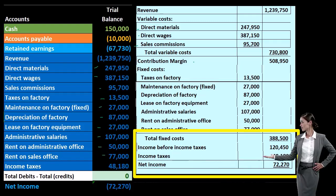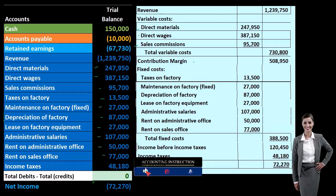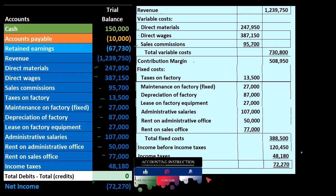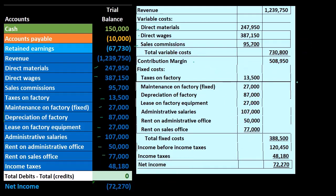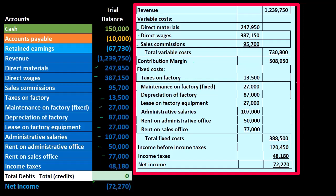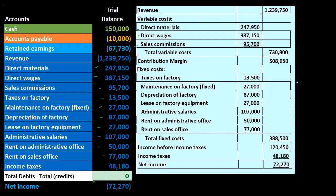That gives us the total fixed costs. Contribution margin from the outer column minus total fixed costs gives us income before income taxes, then we subtract income taxes, and we end up at the same bottom-line number — $72,270 — the same net income we reached on the normal income statement. You might wonder why do this if it doesn't give more information. What this format lets us do is project forward: what happens if production levels change? That's what we'll explore next — this structure allows us to make those projections much more easily.